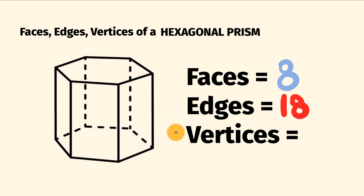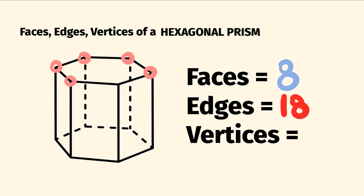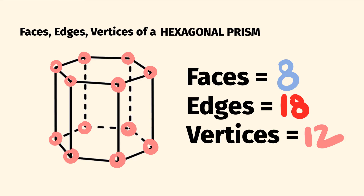Finally, to the number of vertices — these are the corners, the sharp bits. So how many of these are there? We can go around and count them. So on top here we have one, two, three, four, five, six vertices. And on the bottom we have one, two, three, four, five, six vertices. So six plus six, altogether a hexagonal prism has 12 vertices.